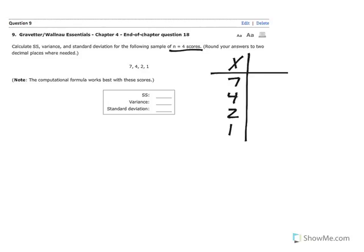And to calculate SS, or the sum of squared deviations, using the computational formula, we say that SS is equal to the sum of x squared minus the sum of x squared over n.